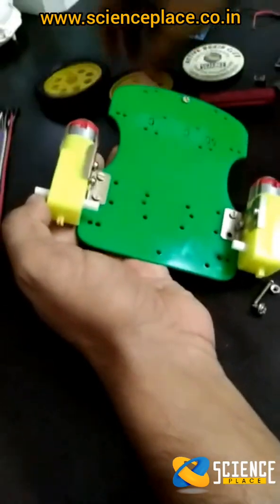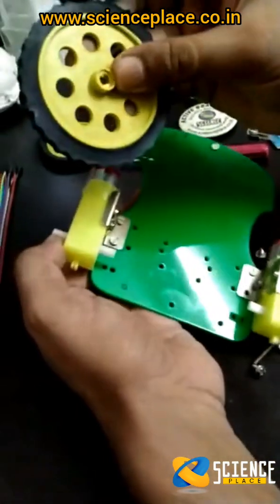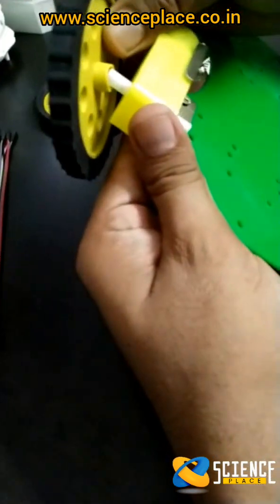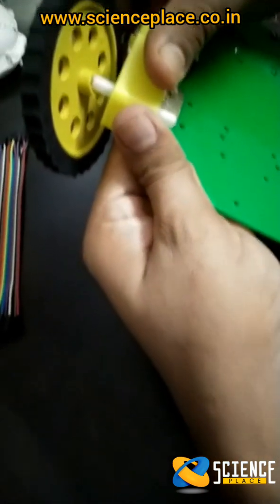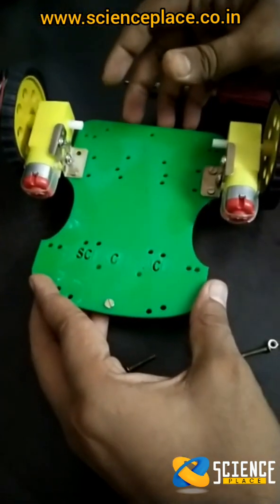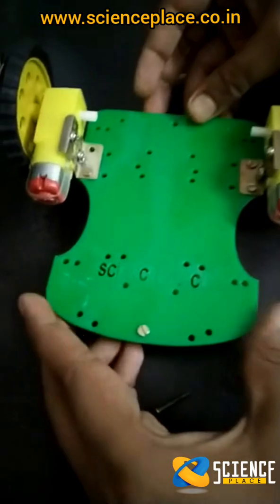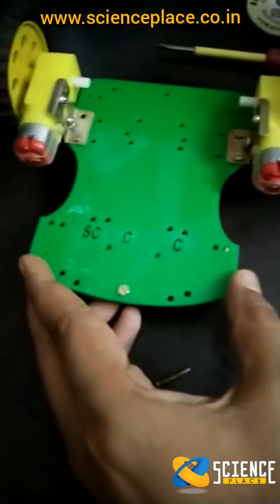Next step we have to put tires. We have two tires. These tires will easily go like this. Now it is fixed, now it is stable.